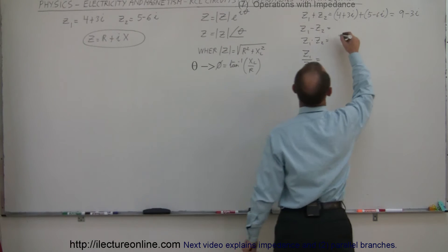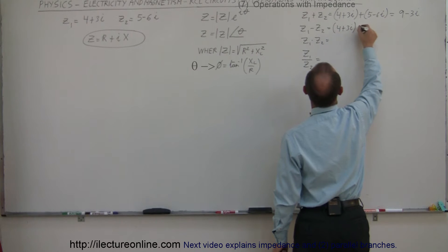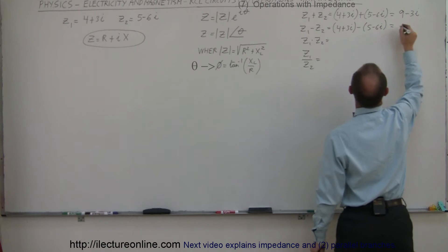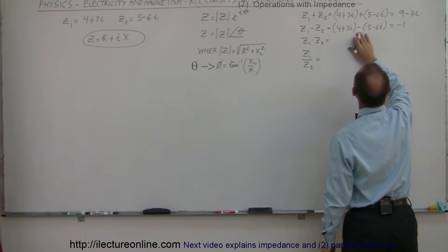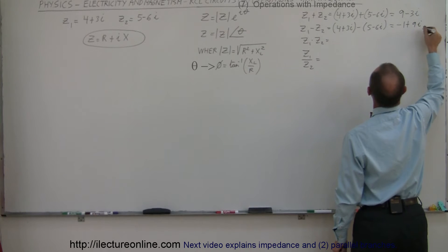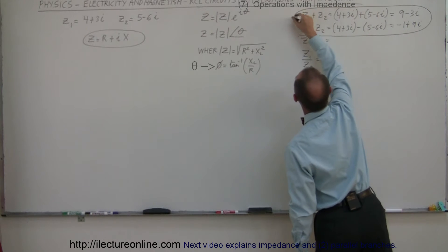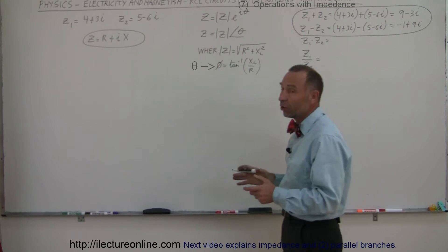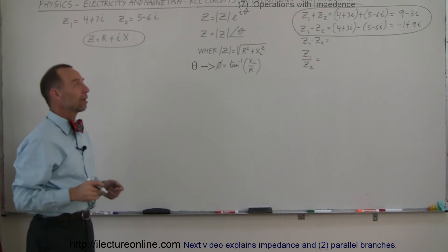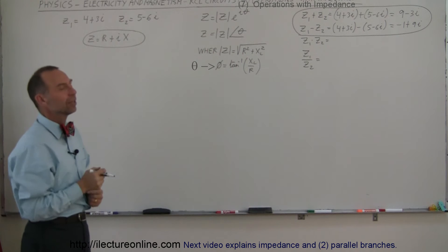Subtracting the two: we have 4 plus 3i, minus 5 minus 6i. So 4 minus 5 is minus 1, and 3 minus a minus 6 becomes plus 6, giving us minus 1 plus 9i. If we're adding and subtracting impedances, it's simply easier to put them in complex number format and add or subtract the real and imaginary parts separately.